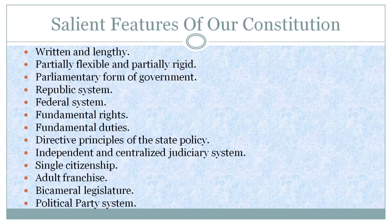Adult Franchise. Bicameral Legislature: The central legislature is called Parliament. The Parliament consists of two houses — the lower house or Lok Sabha and the upper house or Rajya Sabha. Party System: Political parties are the pillars of a democracy. There is a multi-party system in India. The party which wins the majority of votes in the general election becomes the ruling party, whereas the rest will be the opposition parties.